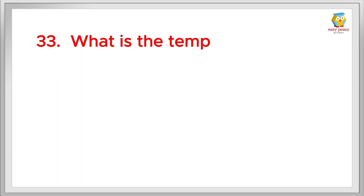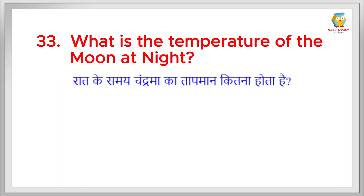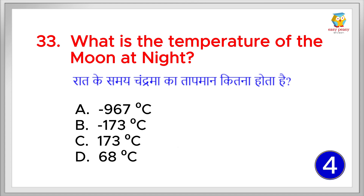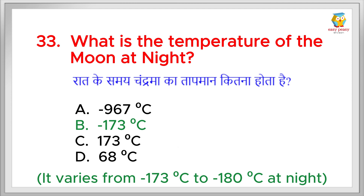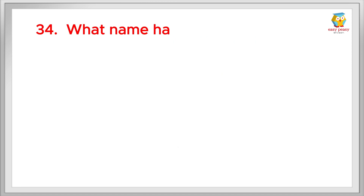What is the temperature of the moon at night? The right answer is minus 173 degrees centigrade. It varies from minus 173 to minus 180 degrees centigrade at night.